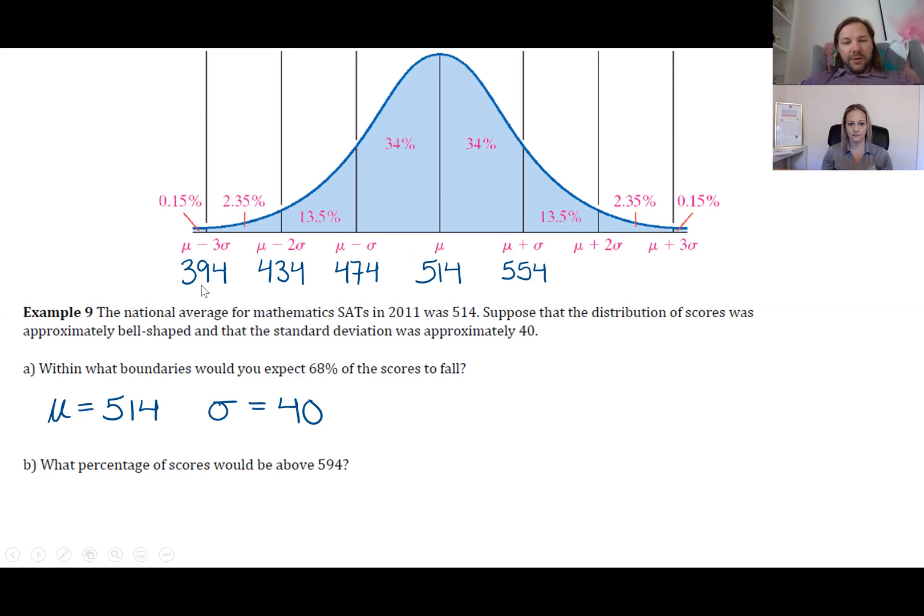...and 394. Then going up: 554, 594, and 634. Now if we look back at the question, within what boundaries would you expect 68% of the scores to fall? That would be from 474 to 554, which is one standard deviation away from the mean.